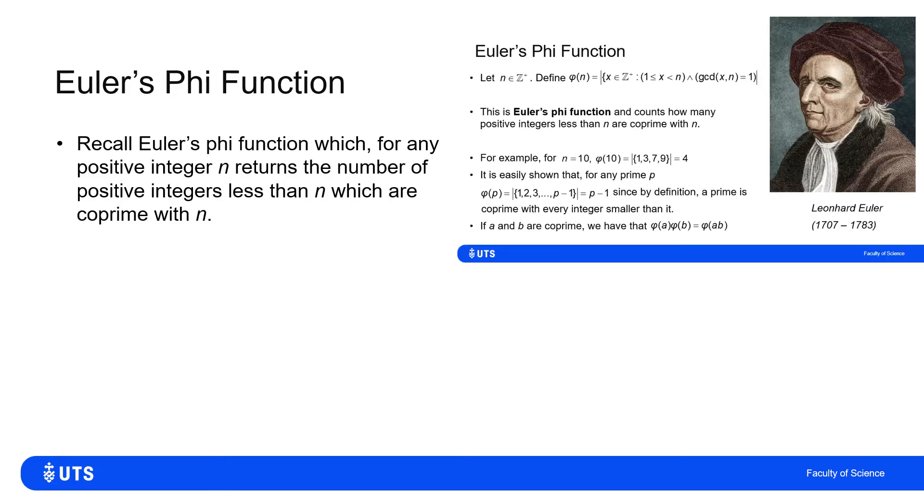In one of the previous videos, we introduced not just the condescending face of Leonard Euler, but also Euler's phi function, which, for any positive integer n, simply counts how many positive integers there are, less than n, which are coprime with n.